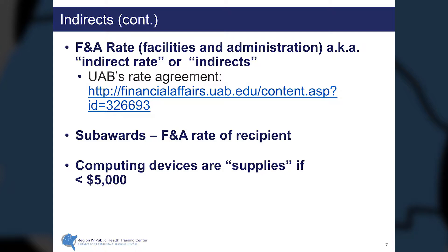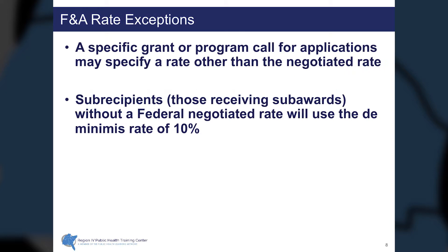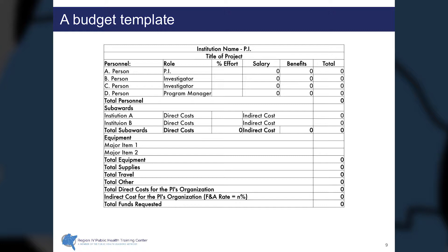Computing devices and similar equipment are considered supplies if they cost $5,000 or less. The rate negotiated by an institution is known as its full indirect rate. There are exceptions — some grants restrict the F&A rate, so the budget may use a rate quite a bit less than the negotiated rate. Sub-recipients who have not created a federally negotiated rate will use what is known as the de minimis rate, which is 10%.